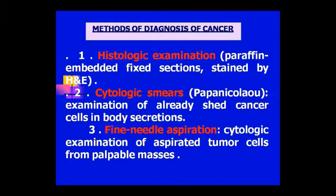Where we locate our tumour, there is a palpable mass showing. In that palpable mass, we insert a needle and aspirate tumour cells from it. We pull the material into the needle, then remove the needle and blow the material onto a slide. We make a smear, stain it, and observe it under the microscope. We call this FNAC — fine needle aspiration cytology.